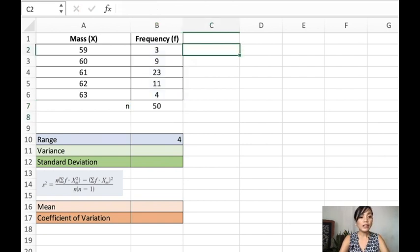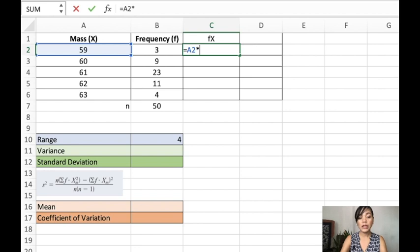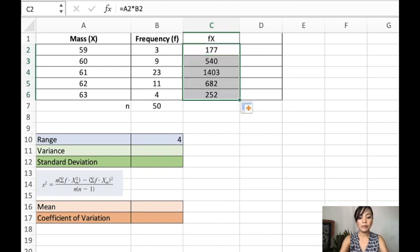We have 50. The next one is we will get the xf in this problem. We just multiply the mass times the frequency, and then I'll drag it down. And I will sum them.